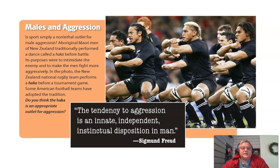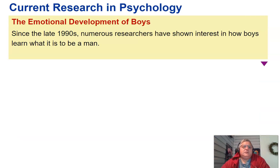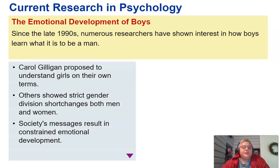Freud thought that the tendency toward aggression is an innate, independent, instinctual disposition in man. Current research in psychology focuses on emotional development in boys. Since the late 1990s, numerous researchers have shown interest in how boys learn what it means to be a man. Carol Gilligan proposed understanding girls on their own terms. Others showed that strict gender division shortchanges both men and women, and that society's messages result in constrained emotional development.